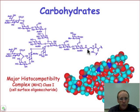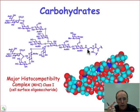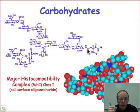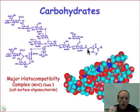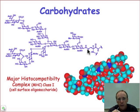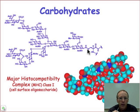With carbohydrates, our emphasis is going to be on structure and reactivity, just as it was with the proteins. But carbohydrates play a number of diverse roles in cellular function. They're involved, for example, in energy storage, in molecular recognition — the major histocompatibility complex is largely an oligosaccharide that sits on the cell surface — and in structural materials. For example, chitin is a polysaccharide that forms the shell wall of many insects.